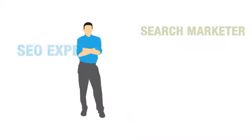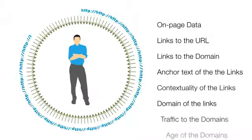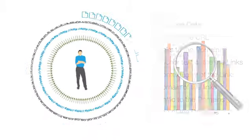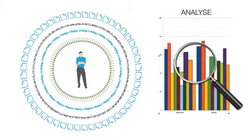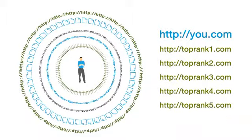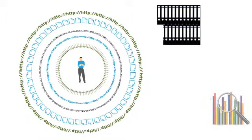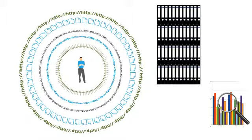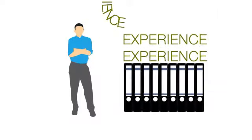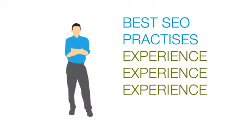Being a search marketer means collecting data from various sources — thousands of URLs and thousands of domains — and analyzing the data, not just for the client's URL but also their competitors. But collecting and analyzing this data soon becomes overwhelming, and so you end up recommending changes based on your experience and known SEO best practices.